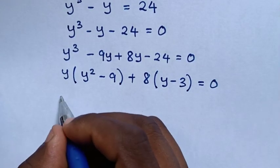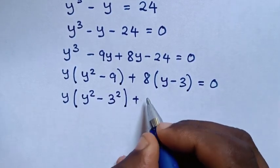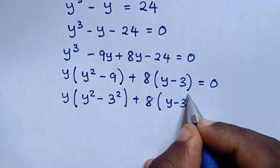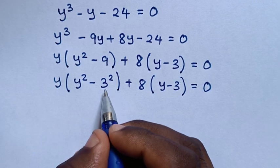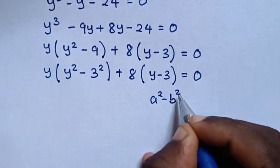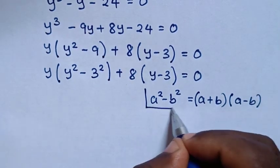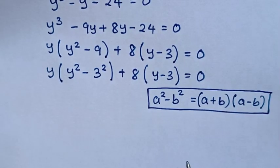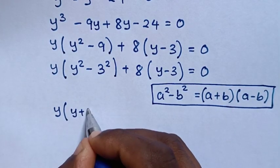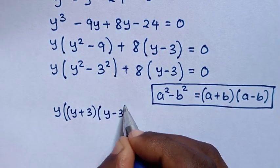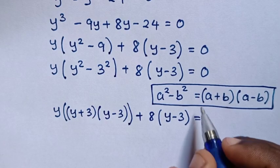Then in the next step, our equation would be y bracket, y squared minus 9 — which is the same as 3 squared — bracket plus 8, bracket, times this y minus 3, bracket, is equal to 0. Then in the next step, from this part, it is in the form of a perfect square, so we'll apply the rule: a squared minus b squared is equal to (a plus b) times (a minus b).